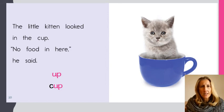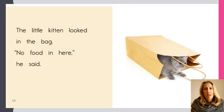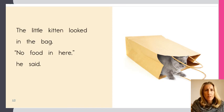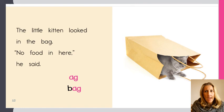'No food in here, he said. The little kitten looked in the...' It looks like it might be a sack, but there is a vowel in there — that A — and I know that A says 'ah.' So I can try to put the B at the beginning: 'b' — 'ag' — the word family 'ag' is in that word — 'bag.' 'The little kitten looked in the bag. No food in here, he said.'